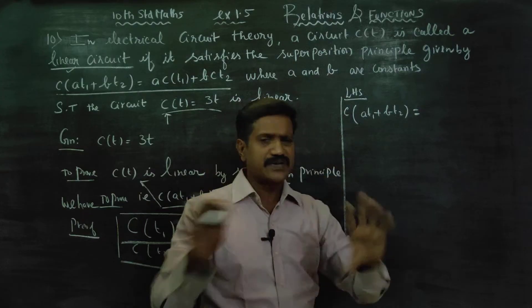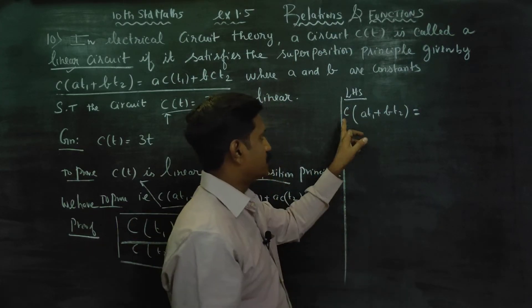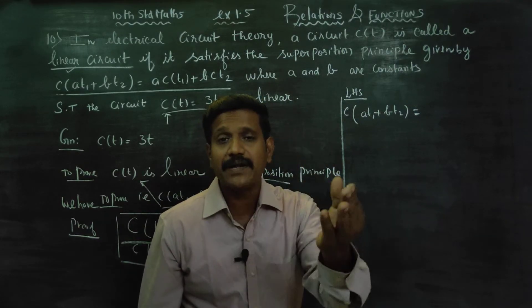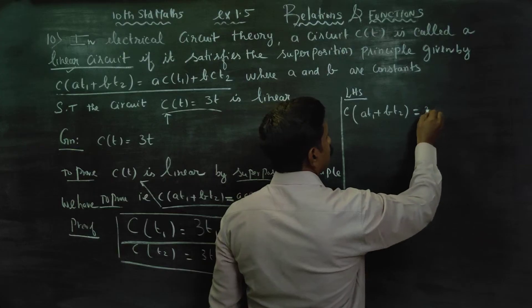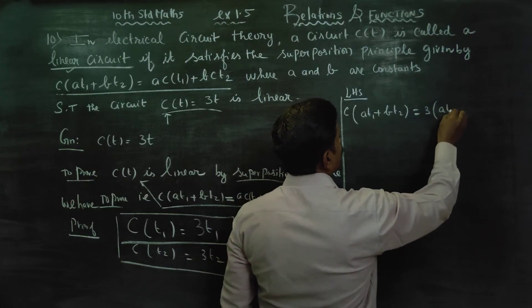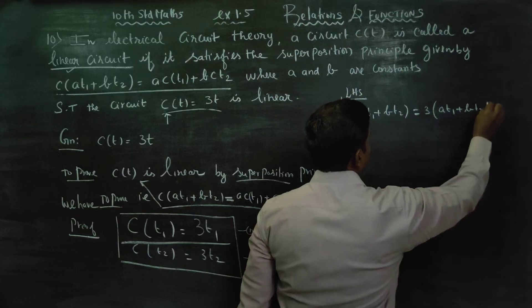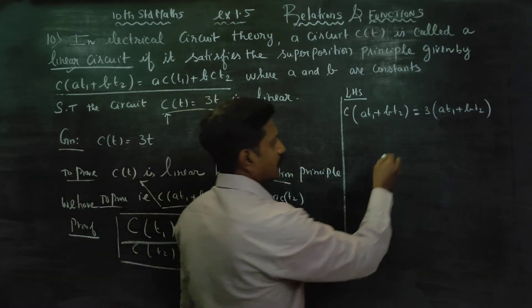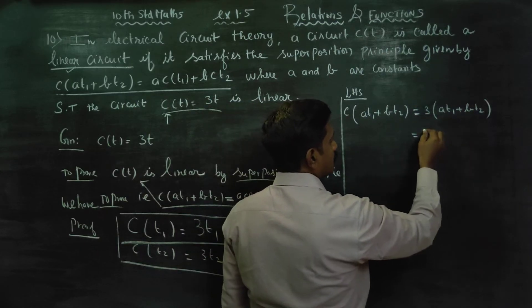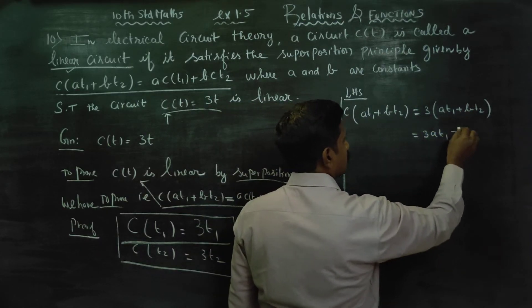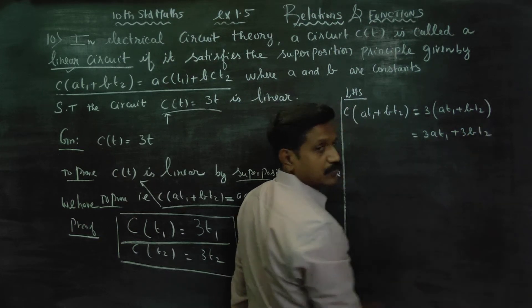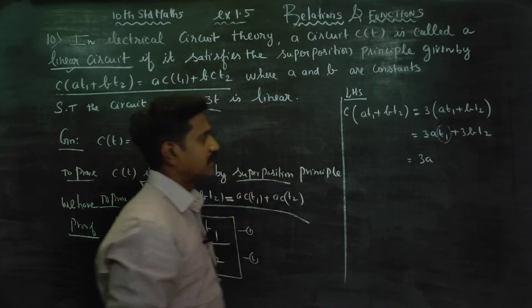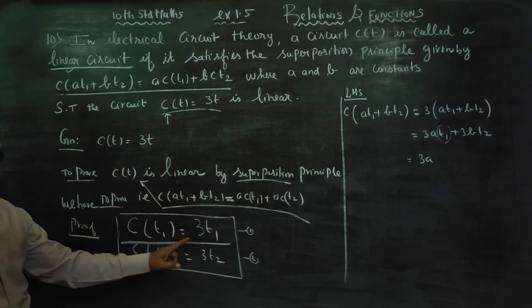Now, C of (aT1 + bT2) is going to be 3 times (aT1 + bT2). Multiplying out the bracket: 3a multiplied into T1 plus 3b multiplied into T2. So 3(aT1 + bT2) equals 3aT1 plus 3bT2.